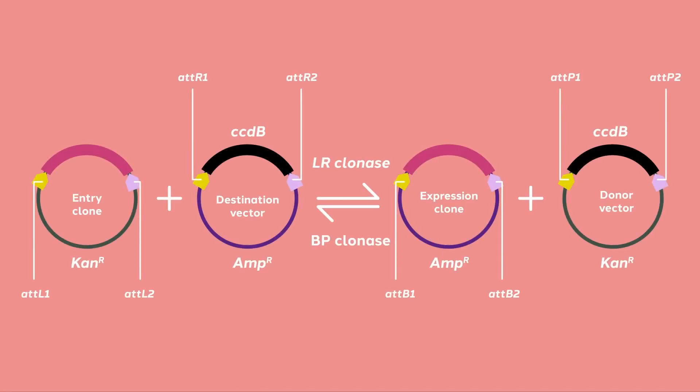The gateway system uses both the integration and excision reactions to create an alternative to restriction enzyme cloning. Since gateway cloning is moving elements from one plasmid to another, they do not refer to integration and excision, but rather the BP reaction going from BP to LR sites, and the LR reaction going from LR to BP sites.